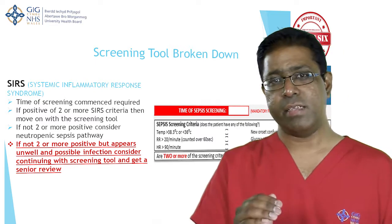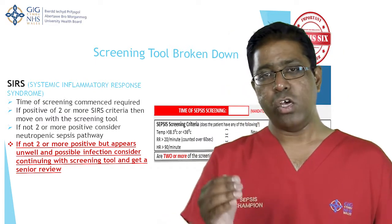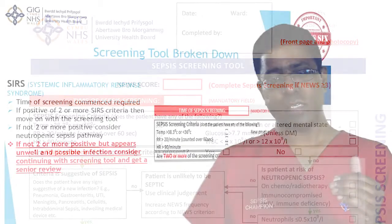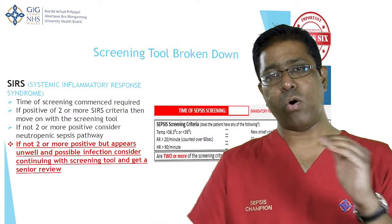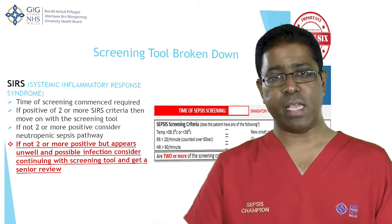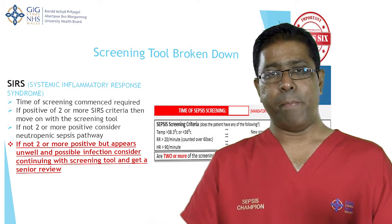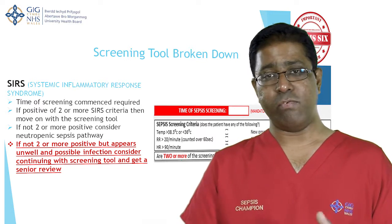Once you've identified that a patient has a NEWS of three, your next step is to start the sepsis screening tool, record the time you started screening, and then look for the signs of sepsis — the sepsis screening criteria, or Systemic Inflammatory Response Syndrome, the SIRS criteria. There are six elements in the SIRS criteria. Except for the white cell count, the other five can be assessed at the bedside very quickly. In some cases you may have to wait for the white cell count, but in some wards you may already have the results when you first see the patient.